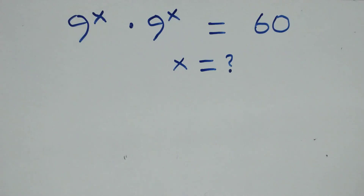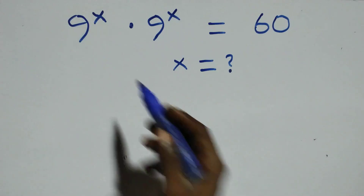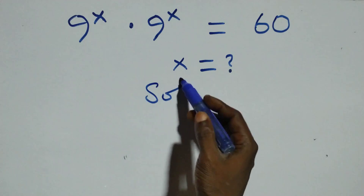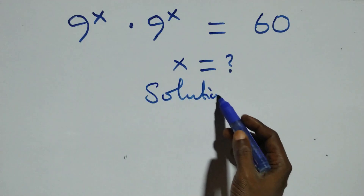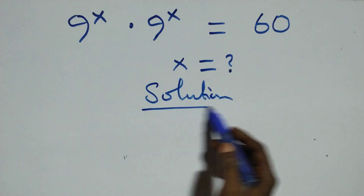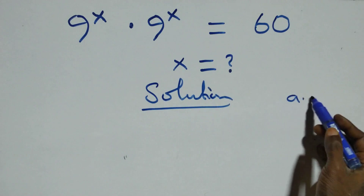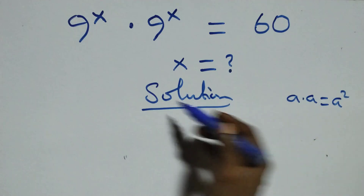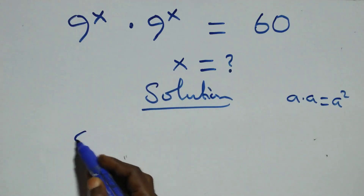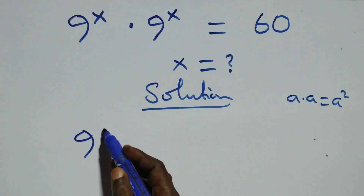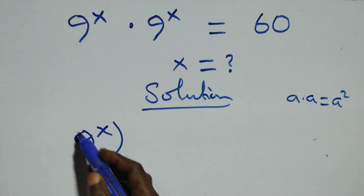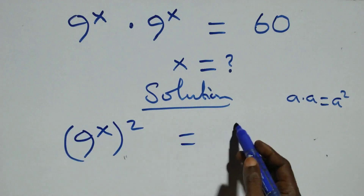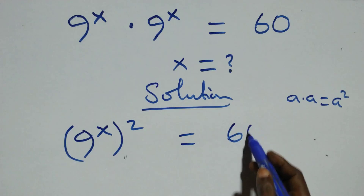Hello, you are welcome. We are going to solve this nice exponential equation. What we have here: when we have a times a, this can be written as a squared. So 9 raised to power x, all squared, equals 60.